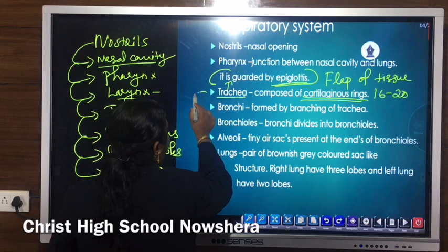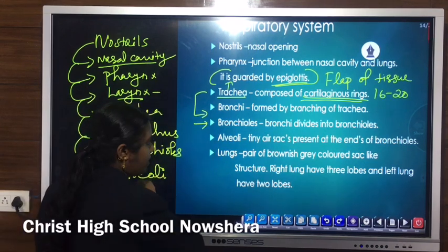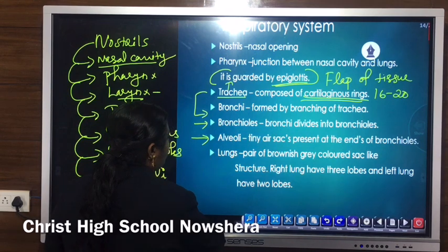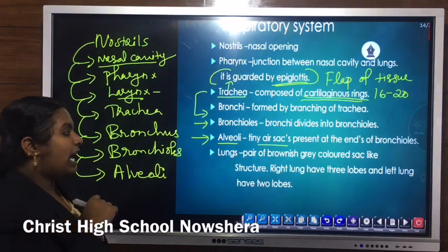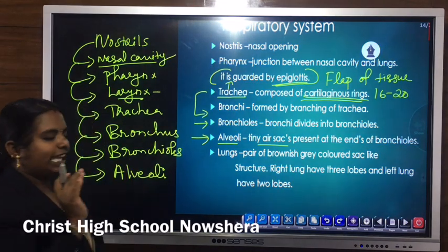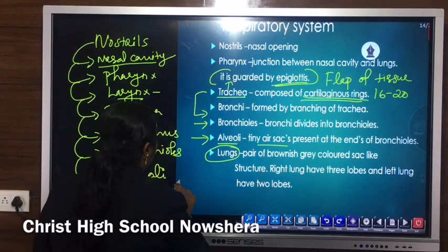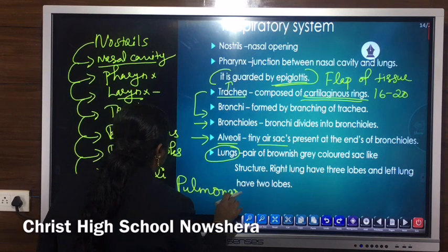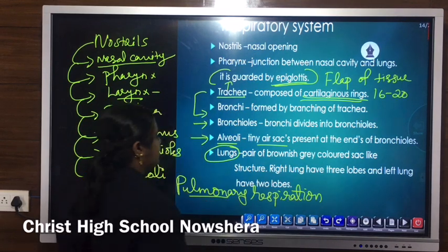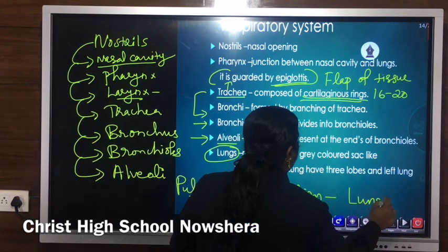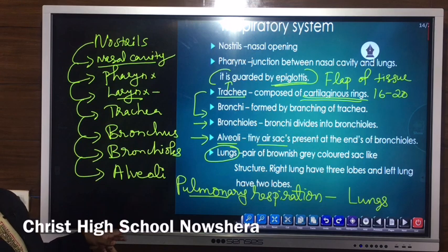The trachea divides to form bronchi, then its final branching is known as bronchioles, and at the tip of the bronchioles are alveoli or air sacs. The main function of air sacs is to increase the surface area for maximum exchange of gas. Organisms that respire through lungs possess pulmonary respiration.